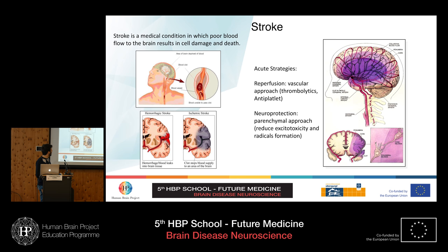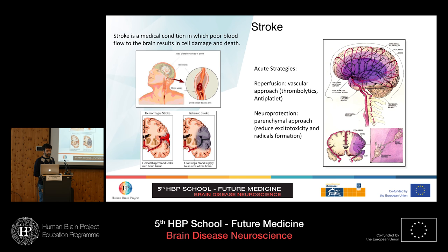There are two main acute strategies for the acute phase of stroke. First, reperfusion via the vascular approach, in which thrombolytics and antiplatelets are given to patients. Second, neuroprotection via the parenchyma approach, focused on the reduction of excitotoxicity and radical formation — the two main causes of cell death. Excitotoxicity is the phenomenon by which tissue damage leads to neurotransmitter leakage into the parenchyma, causing calcium overload and cell death. Free radicals are the other mechanism.